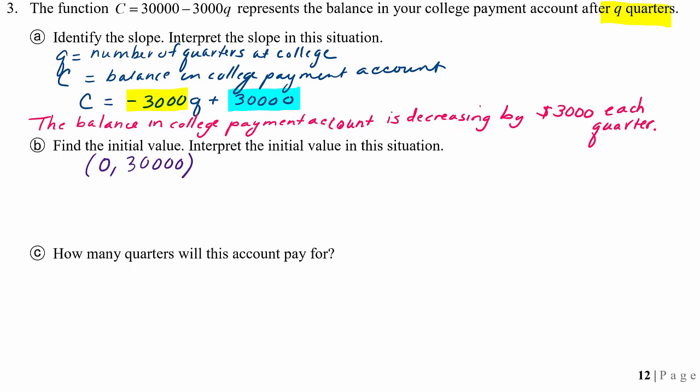If you said that's the initial account balance before any payments have been made, you're right. So this college account has $30,000 as a balance before we start making payments on it. So let's write that down. The initial account balance is $30,000.